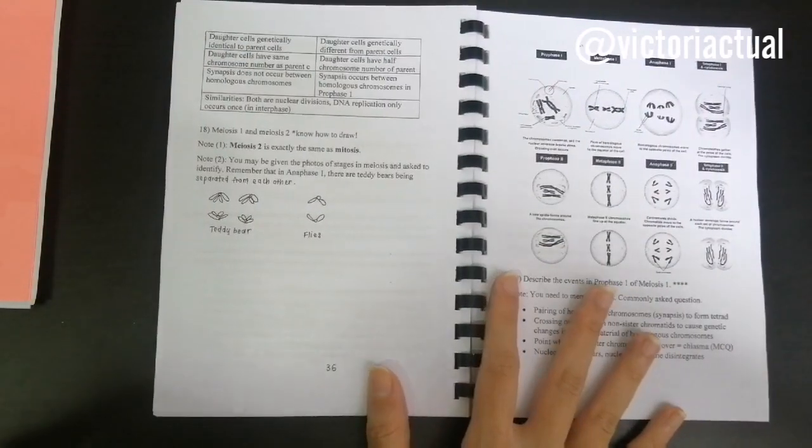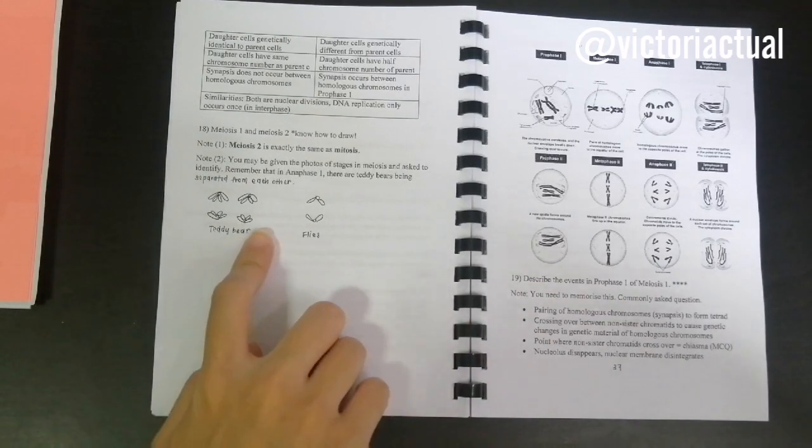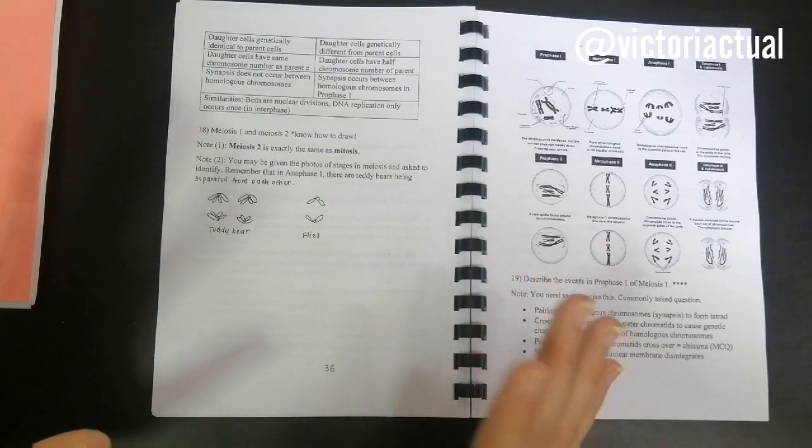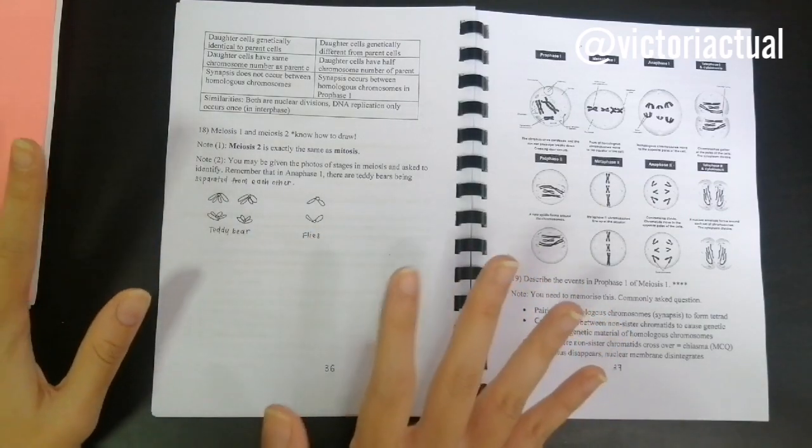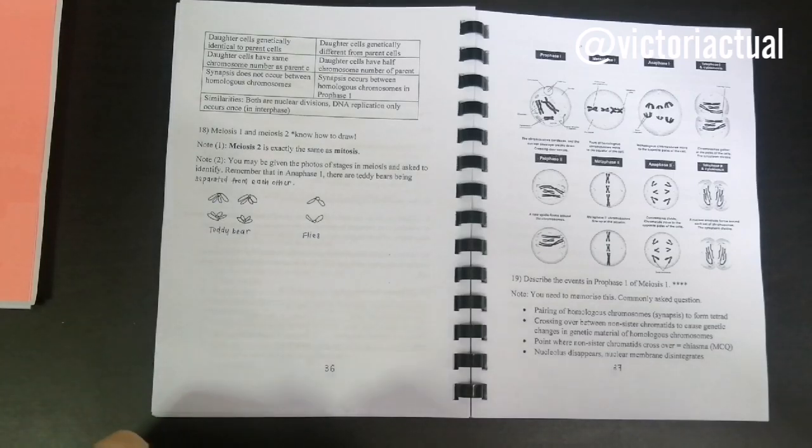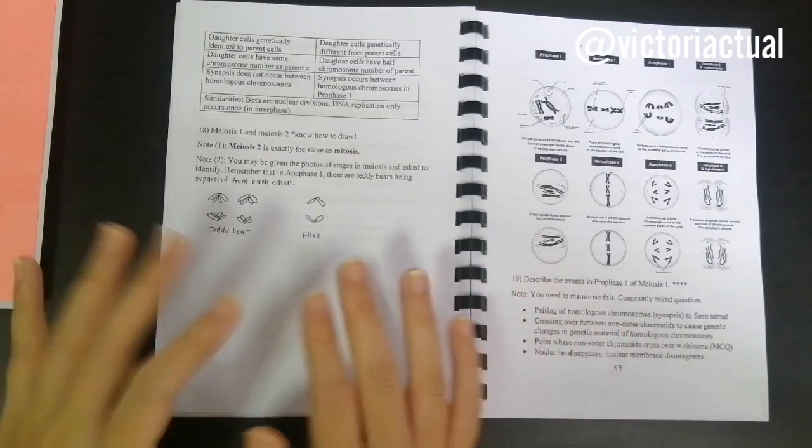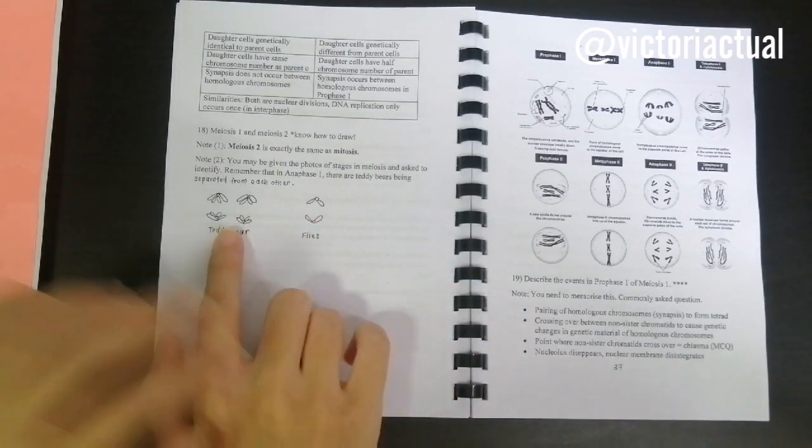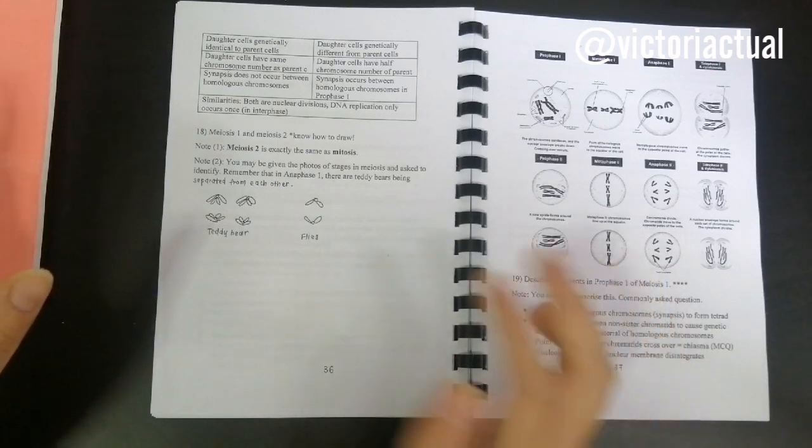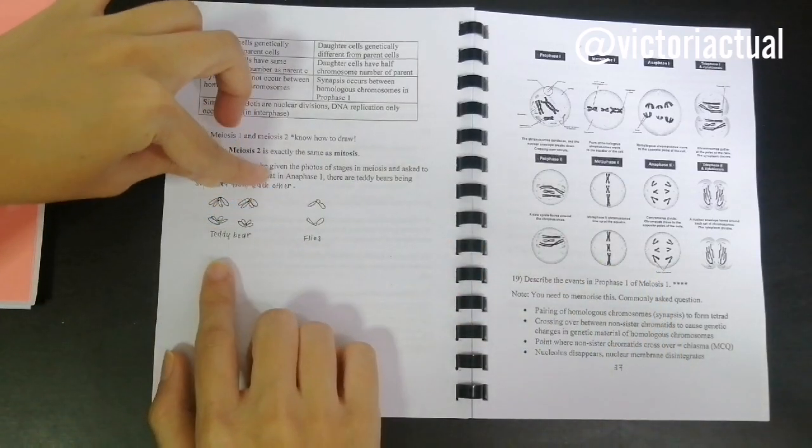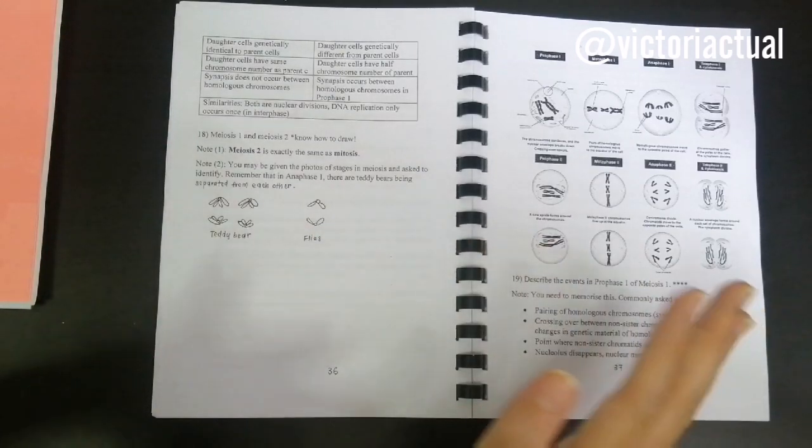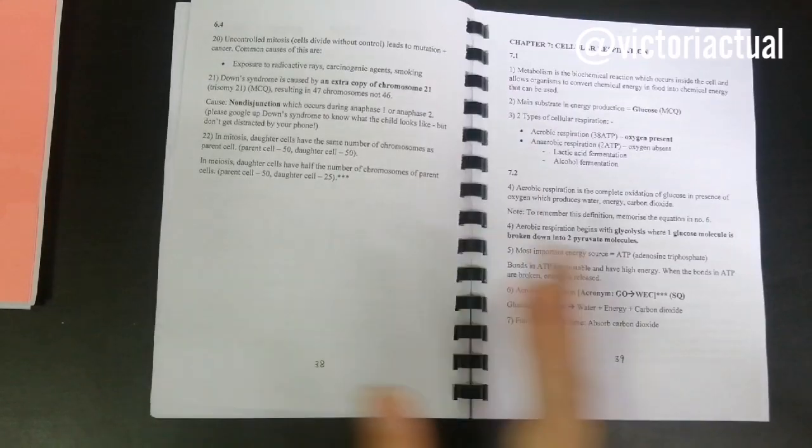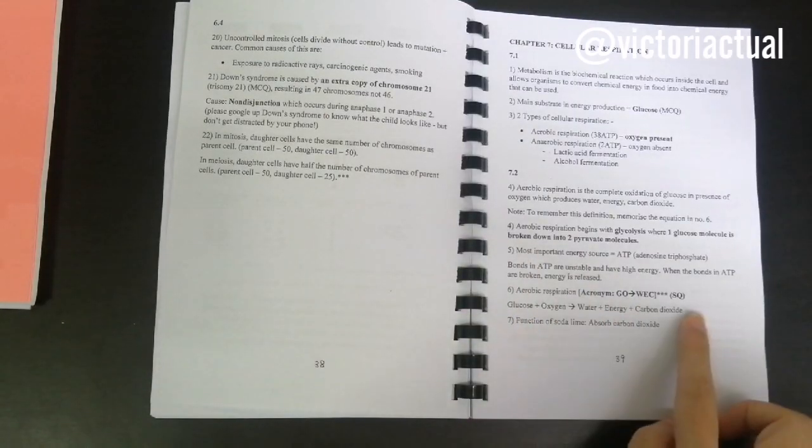I also give tips for like this one, because in anaphase 1, a lot of times you'll be asked to identify the phases, and there'll be anaphase 1 and anaphase 2. Basically in anaphase 1, there are teddy bears being separated from each other. I don't know if you can imagine this, but it's like the Mr. Bean teddy bear, it looks like teddy bears being separated. That's for anaphase 1. If it's anaphase 2, it basically looks like flies. Just little things like that which will help you memorize. Here's another acronym.